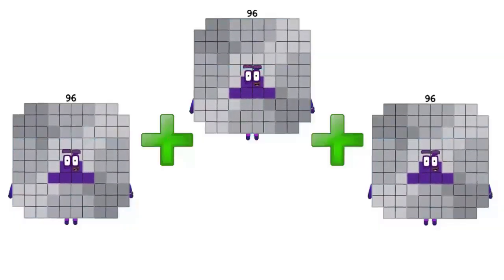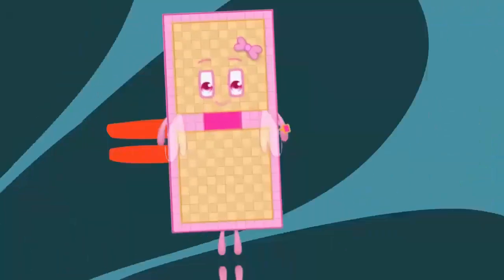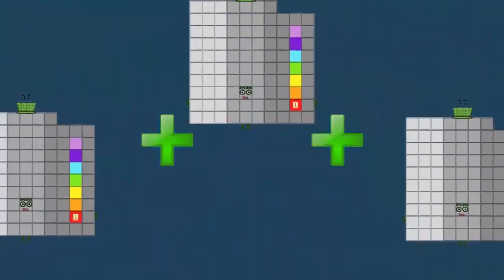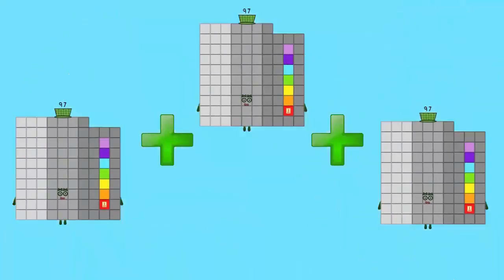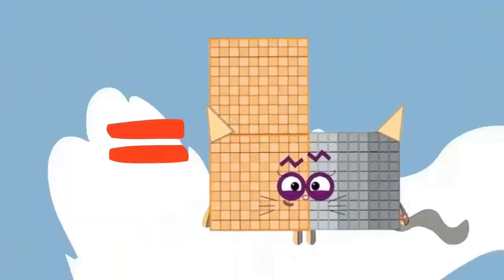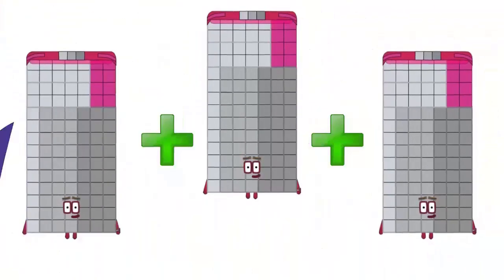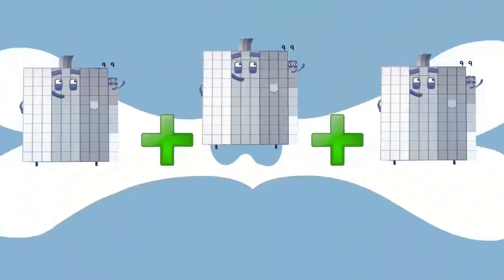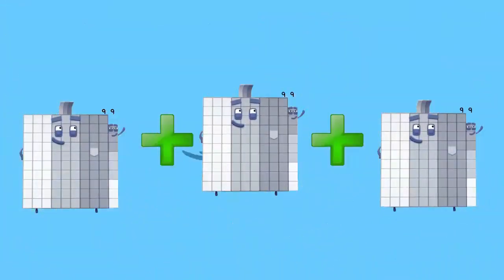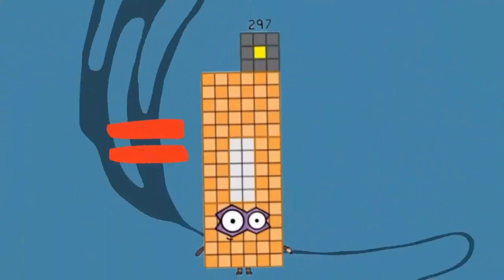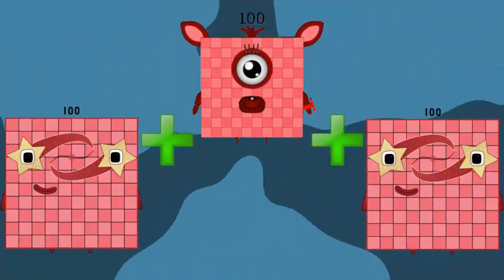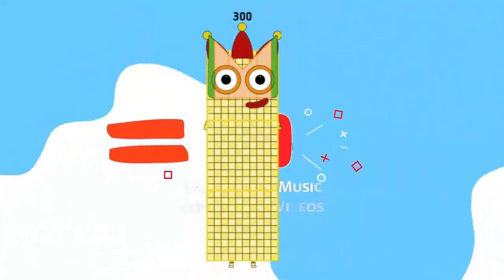96 plus 96 plus 96 equals 188. 97 plus 97 plus 97 equals 191. 98 plus 98 plus 98 equals 294. 99 plus 99 plus 99 equals 197. 100 plus 100 plus 100 equals 300.